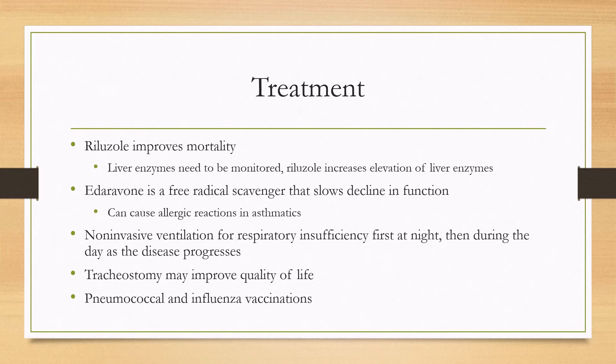As the disease progresses, you may develop respiratory insufficiency, and non-invasive ventilation such as CPAP can become indicated. Usually the respiratory insufficiency is worse at night, but then you may need CPAP also during the day as the disease progresses. Tracheostomy later on can also improve quality of life. It is also recommended for people with ALS to receive the respiratory vaccines — the pneumococcal and influenza vaccinations.